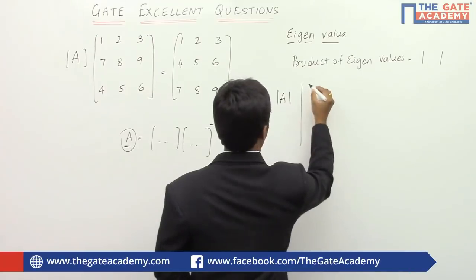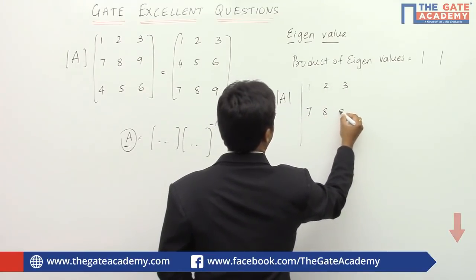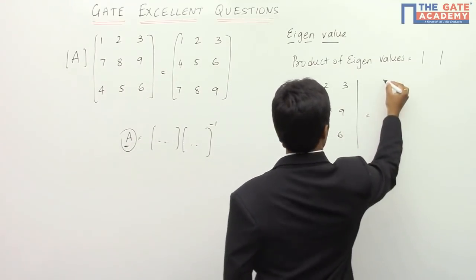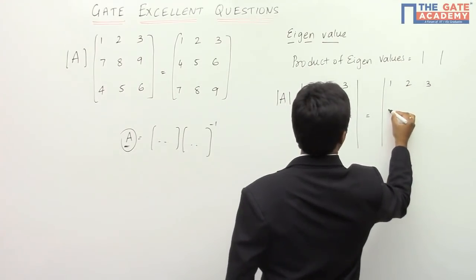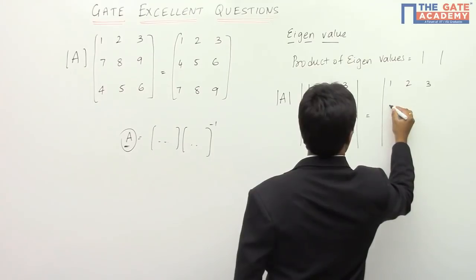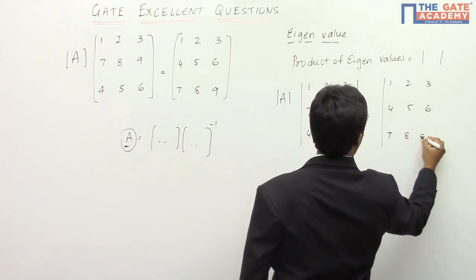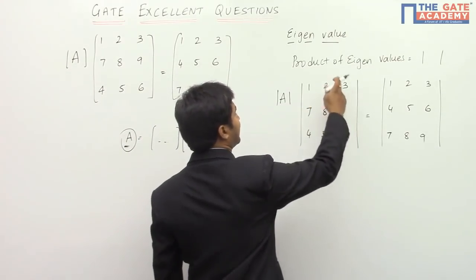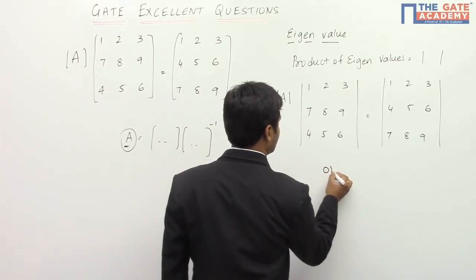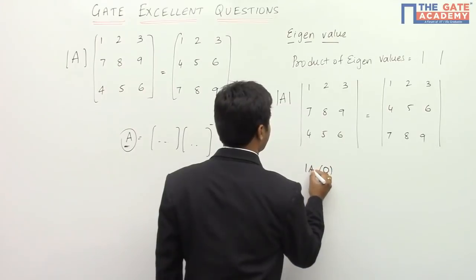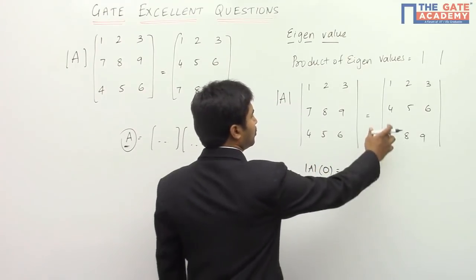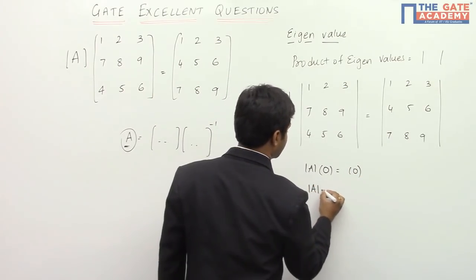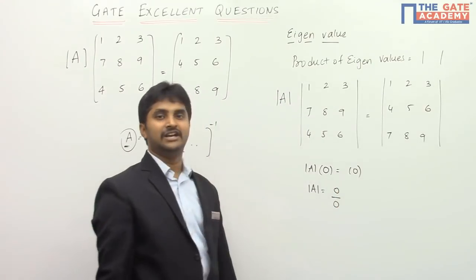This is equal to the determinant of the matrix [1, 2, 3; 4, 5, 6; 7, 8, 9]. Now the problem is that if you calculate these determinants, both will be equal to zero. So zero multiplied by determinant of A equals zero, meaning you get determinant of A equal to zero divided by zero, which is an indeterminate form.